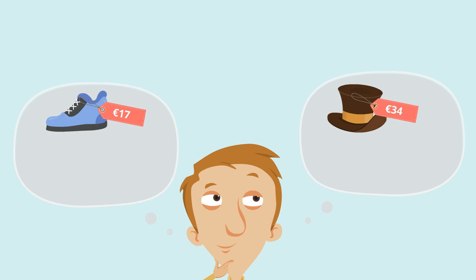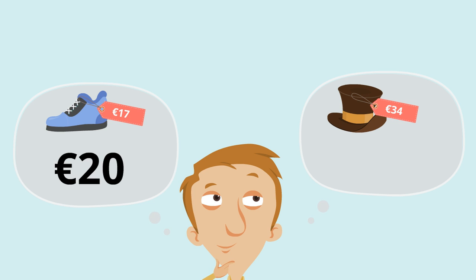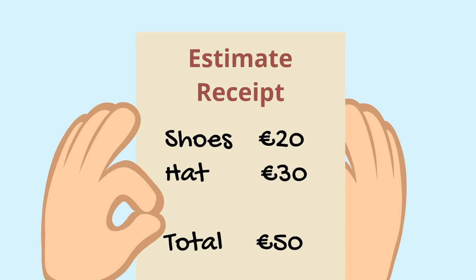So let's go back to what we bought, but I'm going to make it a little bit easier by rounding both of these prices to the nearest 10. So 17 euro for the shoes — that'll round to 20 euro. And 34 euro for the hat — that's going to round to 30, because that's the nearest 10. So how much does this cost us roughly? It's going to be about 50 euro to buy both of these.